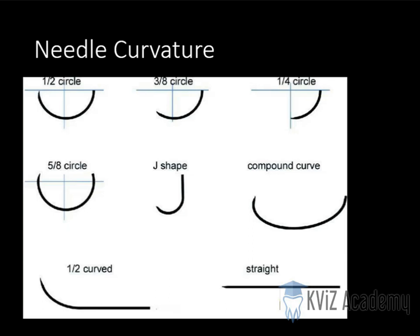You should know that there is a J-shaped needle also available. Then there is a compound curve. It's not single curvature, there is a different curve. Here the curvature is reduced and again curvature is more. Then half curved and half straight, then straight.